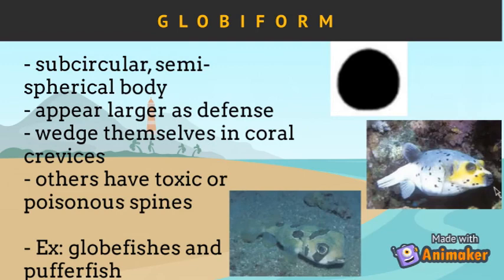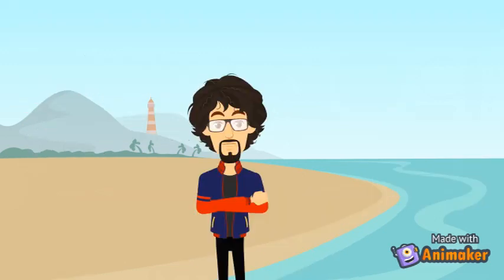The last type of body form is the globiform. Globiform fish have a sub-circular and semi-spherical body shape. They appear larger and more frightening, which serves as their defense mechanism. They wedge themselves into coral crevices more securely when threatened. Other species may have toxic or poisonous spines. Pufferfish, boxfish, and porcupine fish have this type of body form.